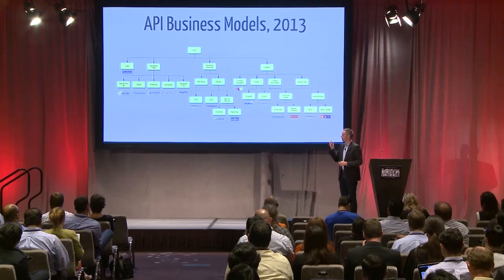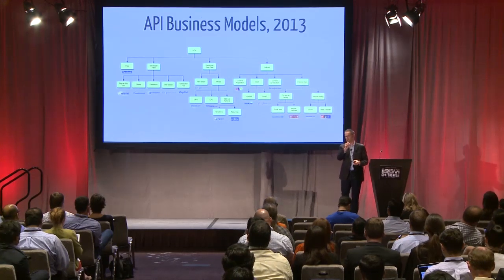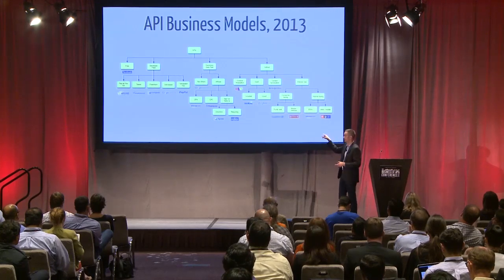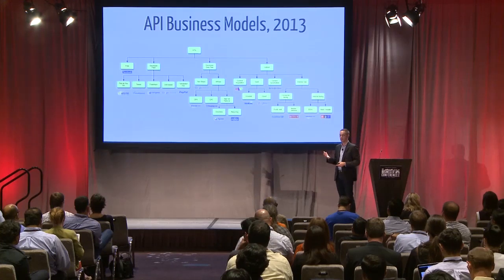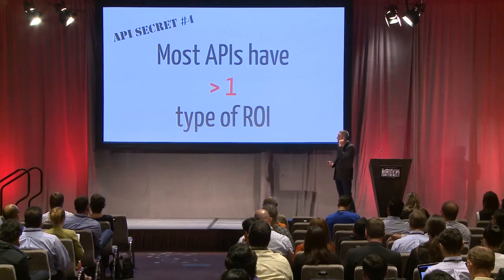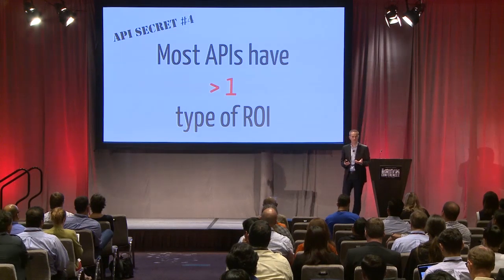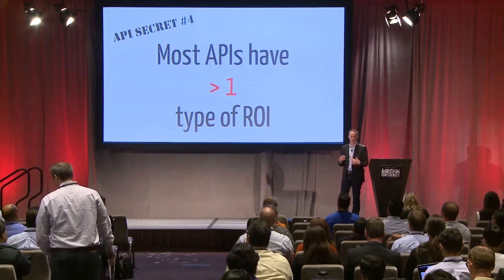Don't try to find just one node on that matrix and say 'that's what we did.' Most APIs — certainly most successful APIs — have more than a single way in which they achieve their return on investment. It costs money to build, provision, support, and evangelize. APIs are not free to build and support. So if you're going to make the case for why you have an API, it helps to have a set of reasons why. Think about which combinations of these 20 business models make sense.